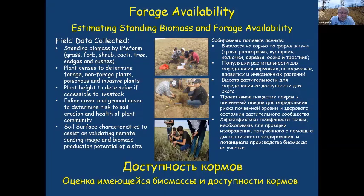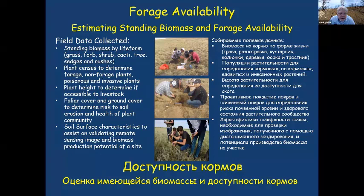For field data collection, we look at standing biomass by life form: grasses, forbs, shrubs, cacti, trees, sedges, and rushes. We use a plant census to determine which plants are forage and which are non-forage. We determine plant height to assess if vegetation is accessible to livestock — in most of Akmola, the vegetation we saw is reachable by livestock. We also look at foliar and ground cover to determine risk of soil erosion and plant community health.